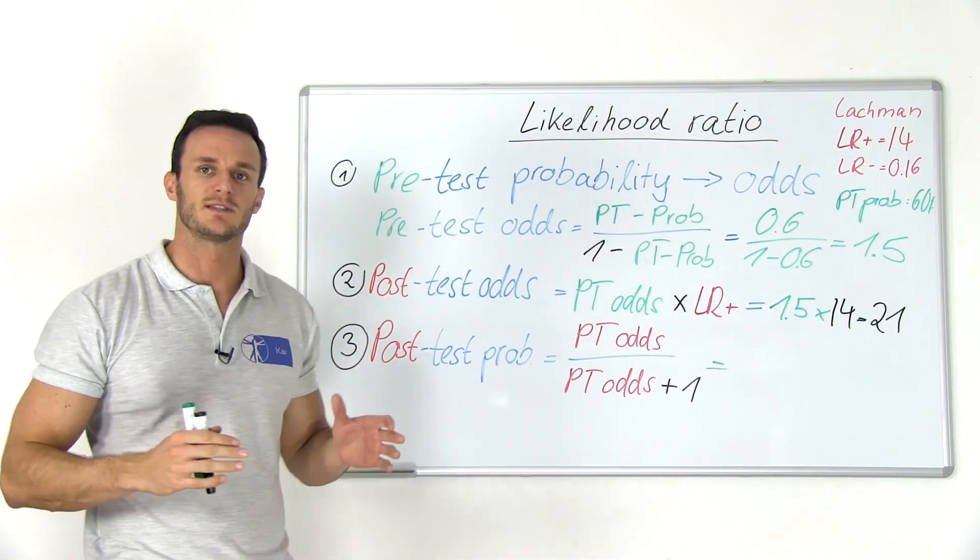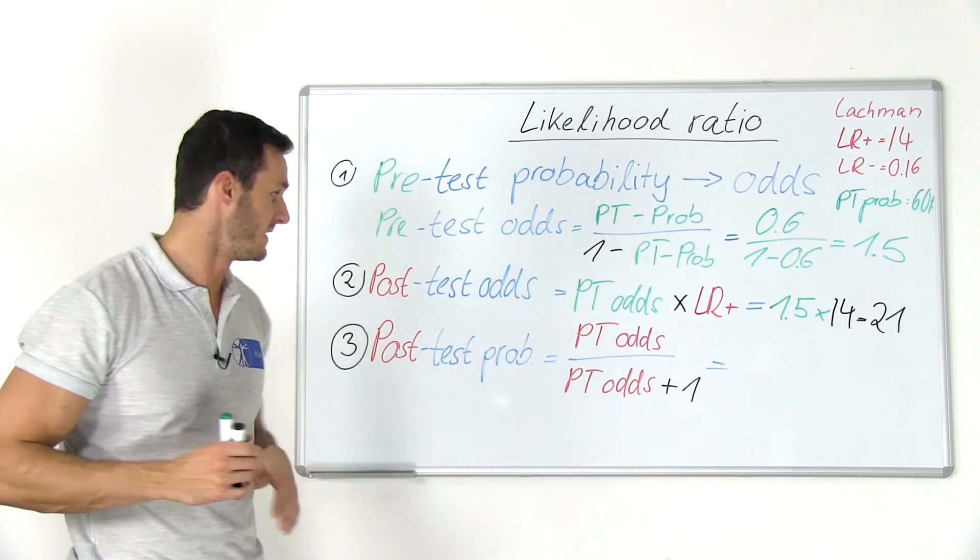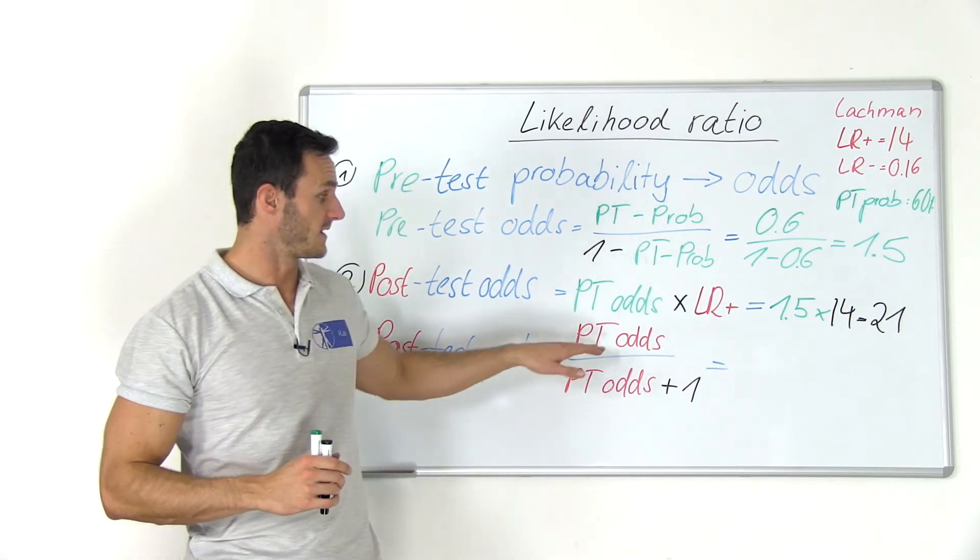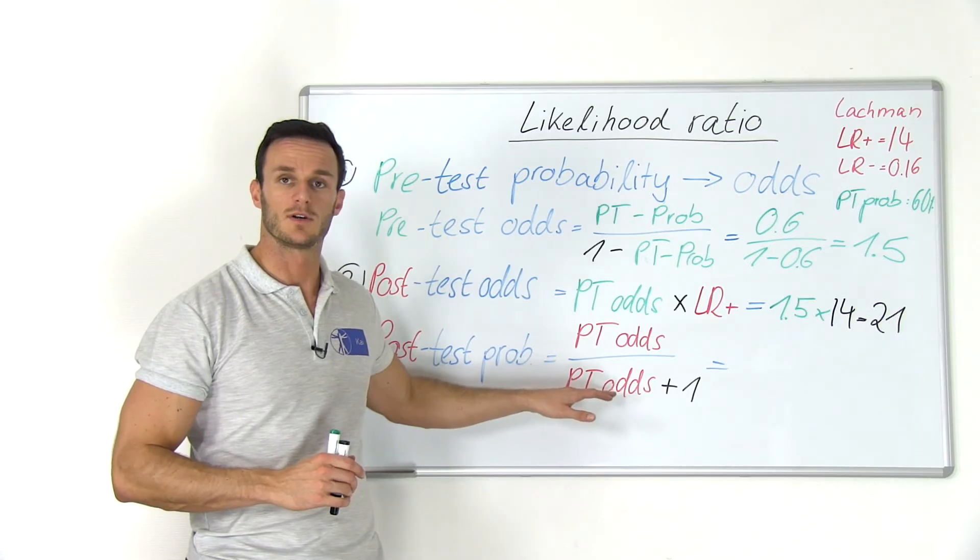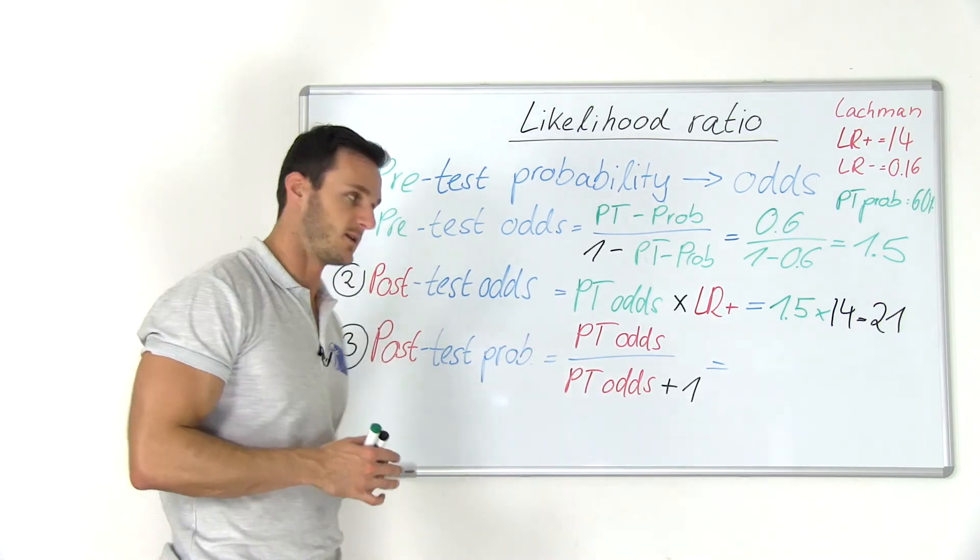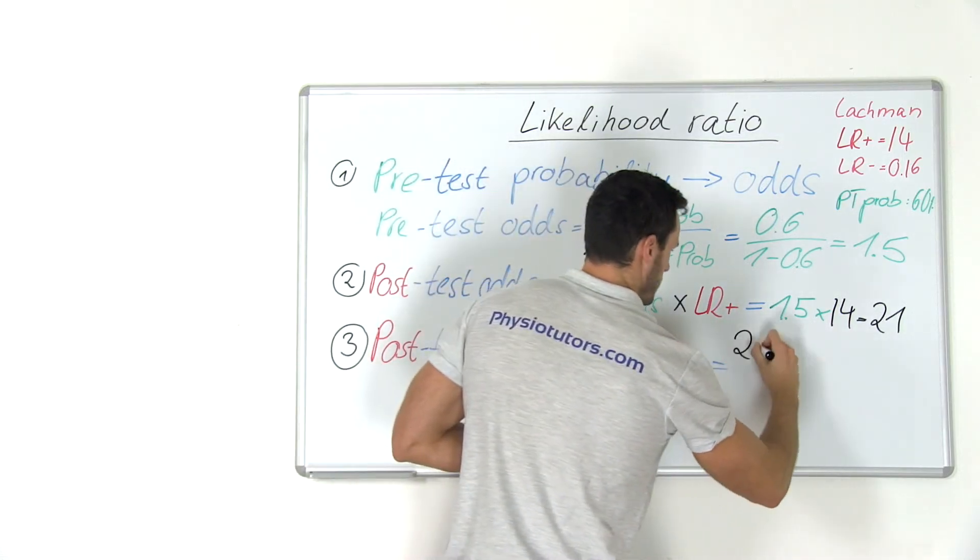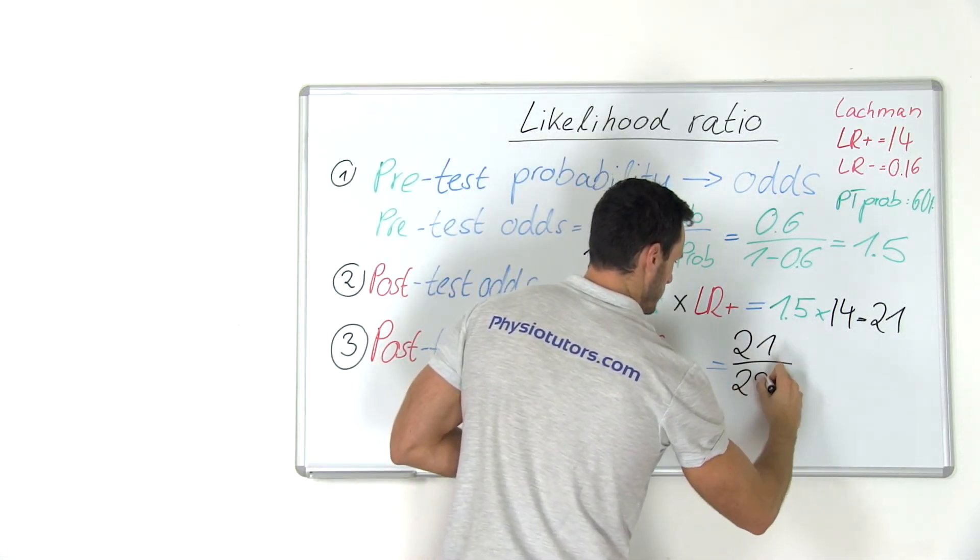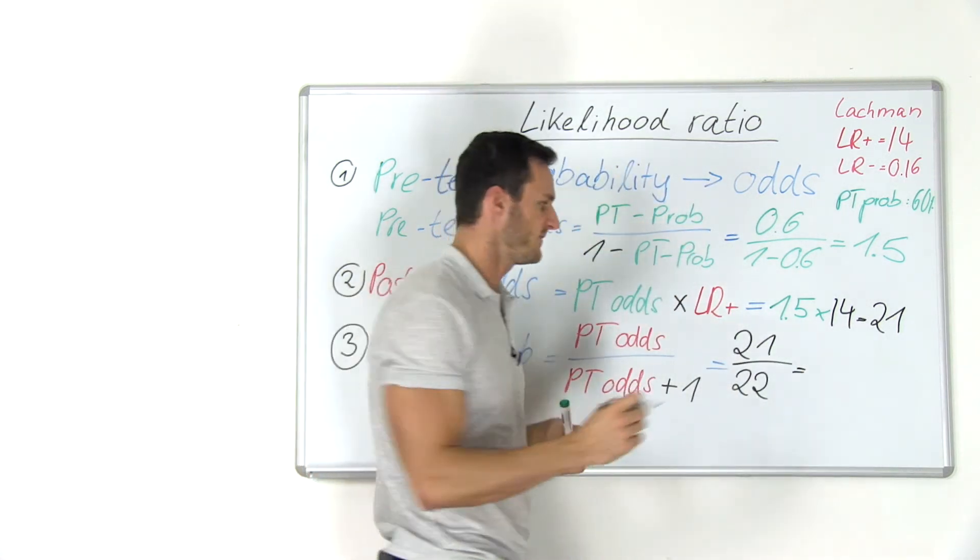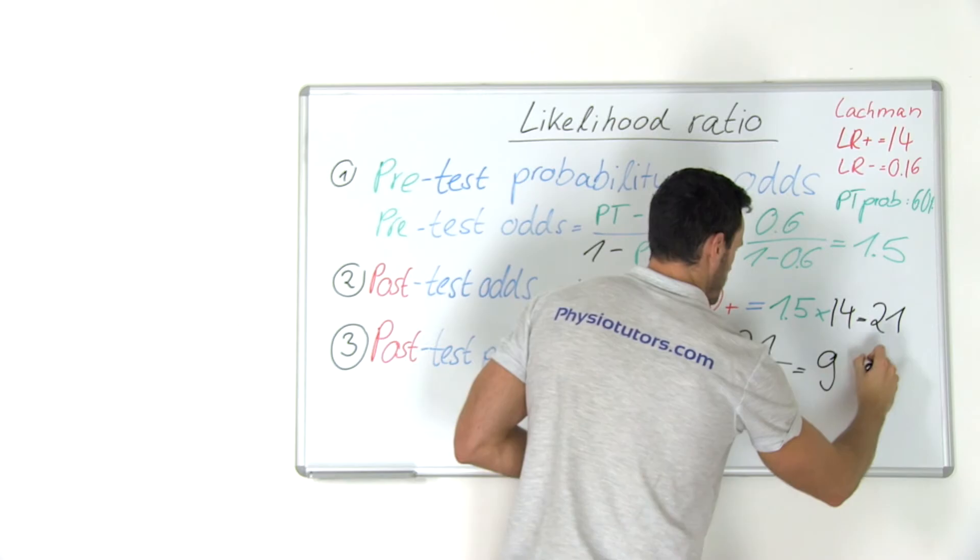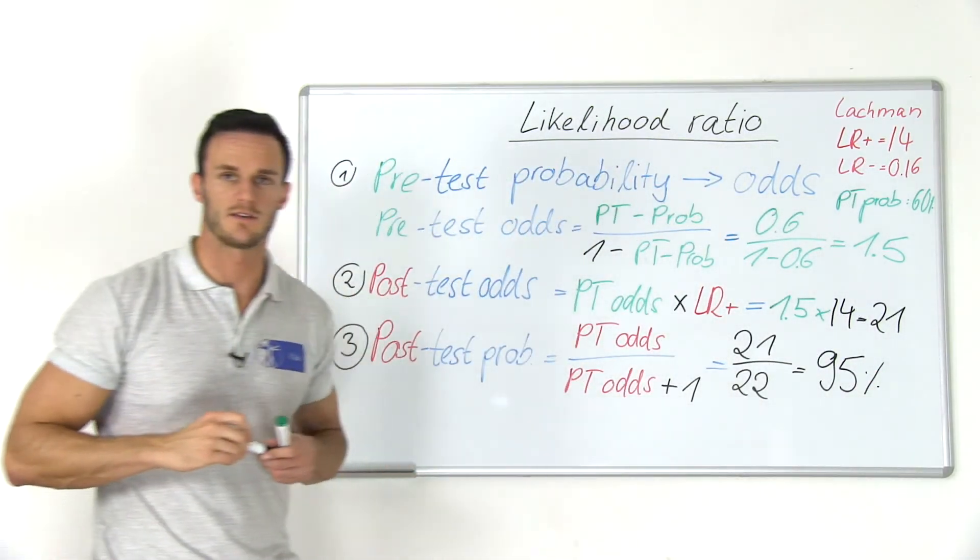Now, so that this number has a meaning, I have to convert it back into a post-test probability. And I can do that if I take the post-test odds of 21 and divide it through the post-test odds plus 1. So I will end up with 21 through 22, and this actually gives me 0.95, which is a post-test probability of 95% in case of a positive test.